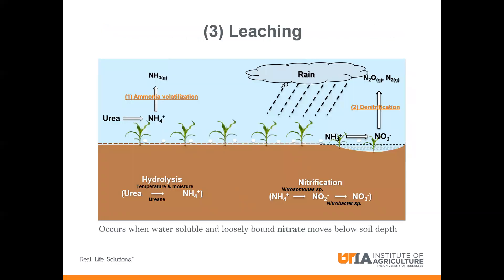The third nitrogen loss pathway is leaching. For coarse-textured soils, if there's heavy rainfall, nitrate is loosely held on the exchange sites on the soil surface, so it easily moves below the rooting depth where the plant can take it up, and that nitrogen is lost through that process.